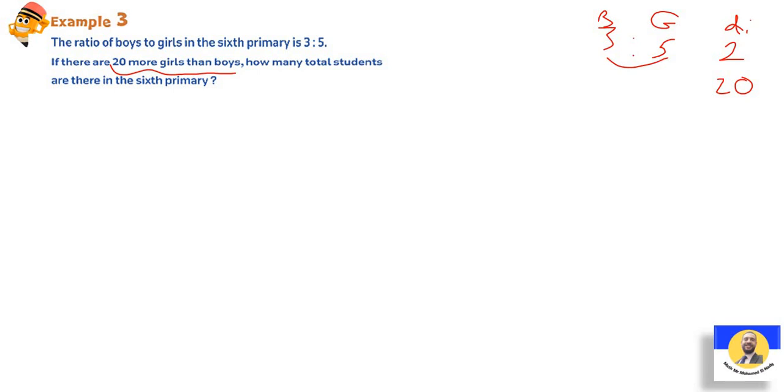So 5 minus 3, we do greatest minus the smallest. 5 minus 3 is 2. Then ask 2 by what equals 20? It's 2 by 10. So here 5 by 10 is 50, and 3 by 10 is 30. So how many total students are there? The total students is 30 students and 50 students, so 30 plus 50 equals 80 students.